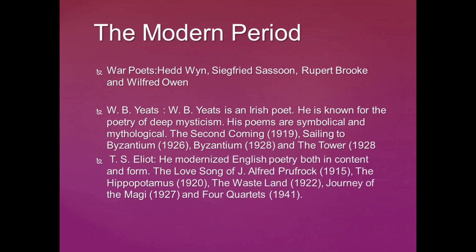T.S. Eliot is a representative modern poet who modernized English poetry both in content and in form. The Love Song of J. Alfred Prufrock, published in 1915, The Waste Land, published in 1922, The Journey of the Magi, and The Four Quartets, published in 1943, are his masterpieces.